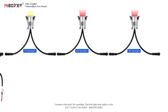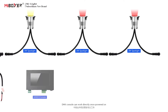The first light emits yellow color and the rest emit red color, indicating the auto address editor worked successfully. There is no need to set up the address manually, making it more convenient. The DMX console can work directly once powered on.